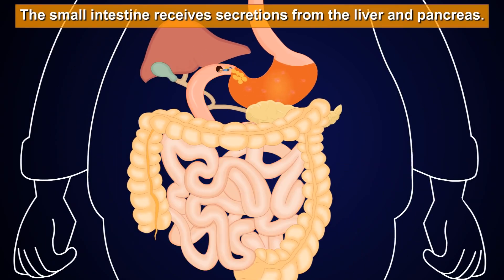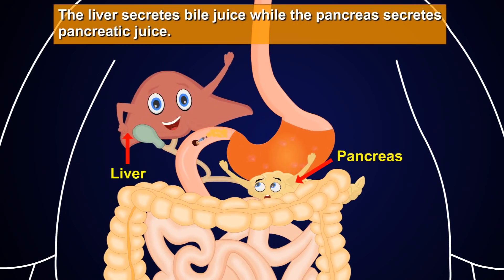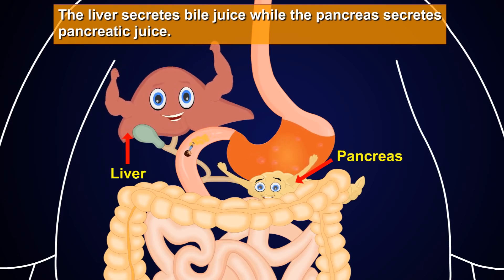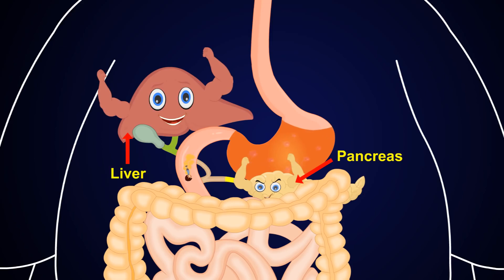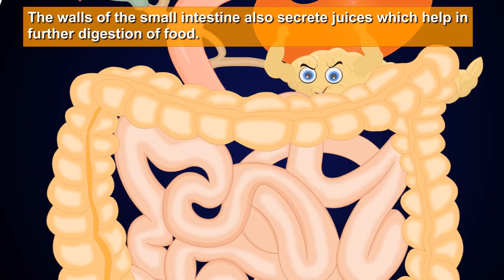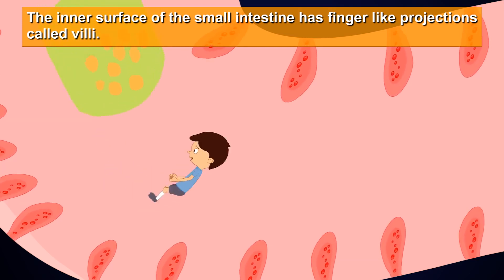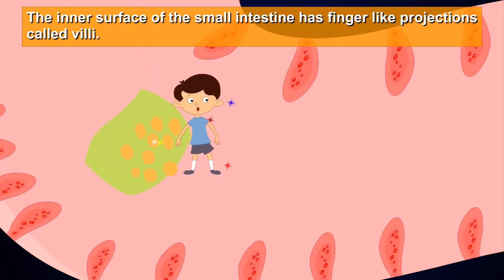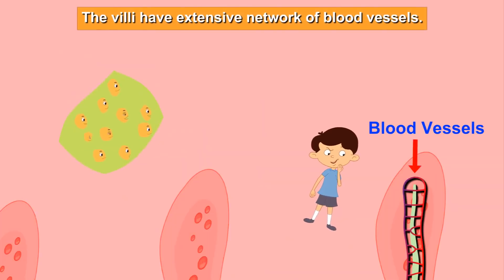The small intestine receives secretions from the liver and pancreas. The liver secretes bile juice, while the pancreas secretes pancreatic juice. The walls of the small intestine also secrete juices which help in further digestion of food.